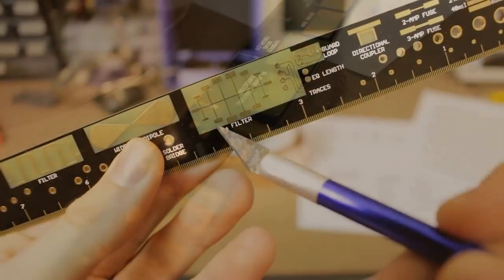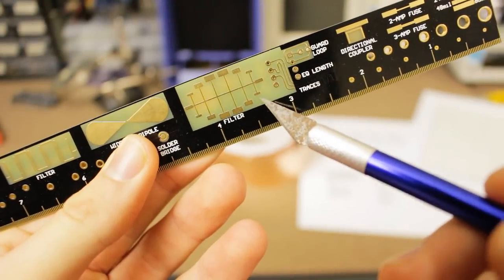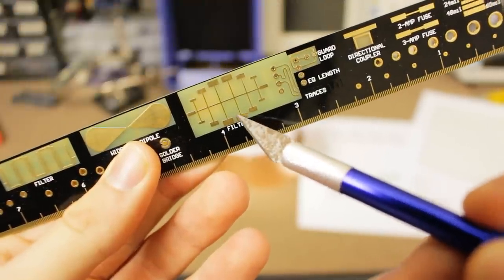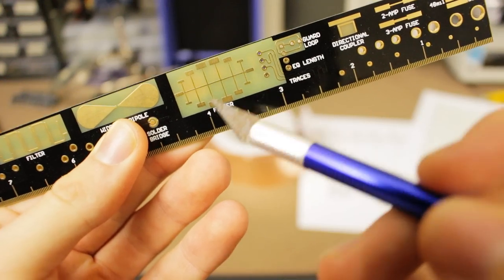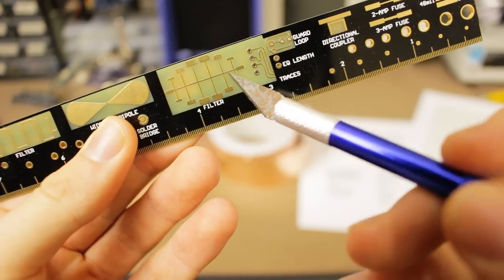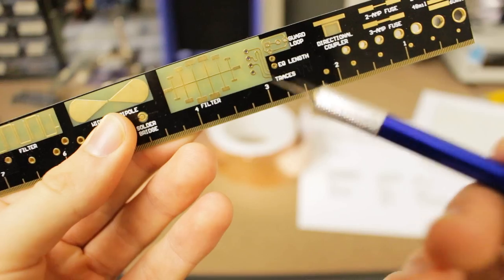But what you can do is use what's called distributed components. And what these are are just little bits of metal that you etch out of your copper layer on your PCB. You basically design the structure so that these little things resonate in such a way that the filter exhibits a frequency response that you're actually looking for.